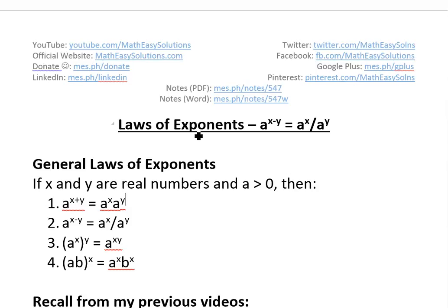I'm trying to discuss further into general laws of exponents and look at the proof for this one, a to the power of x minus y, and show that it equals a to the power of x divided by a to the power of y. Basically in my last video I went over this one right here, which is a to the x plus y equals a^x times a^y, and in this video I'll prove this one right here.